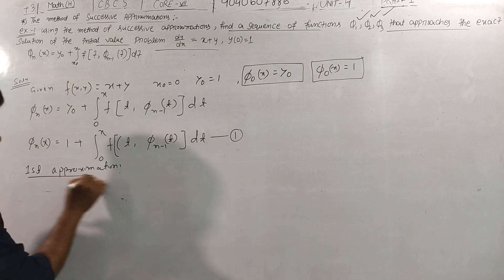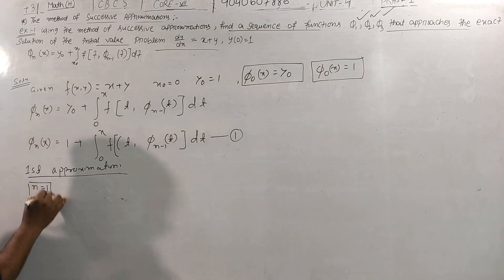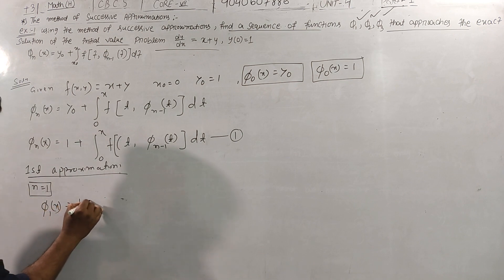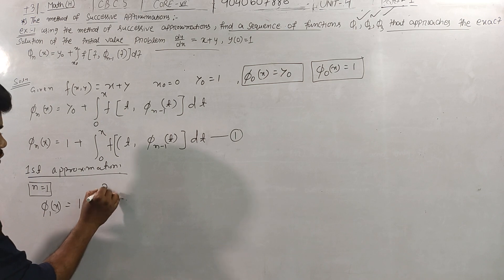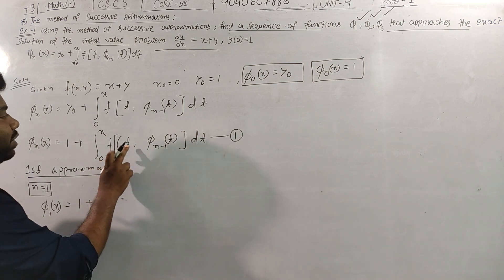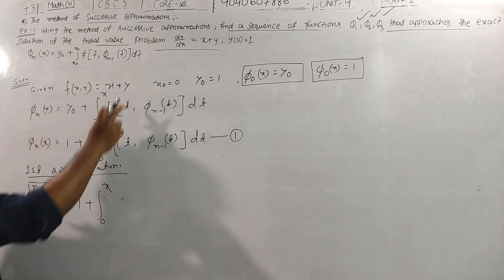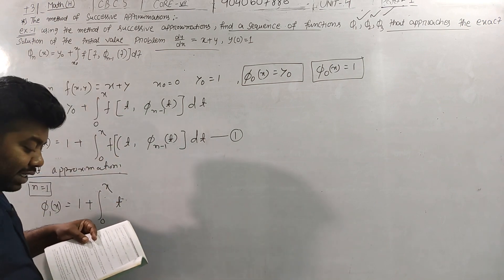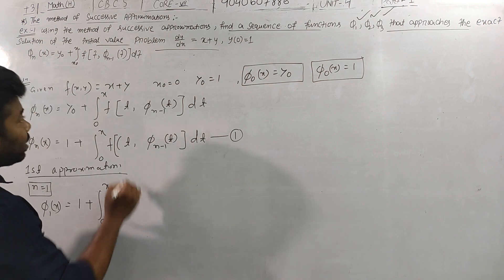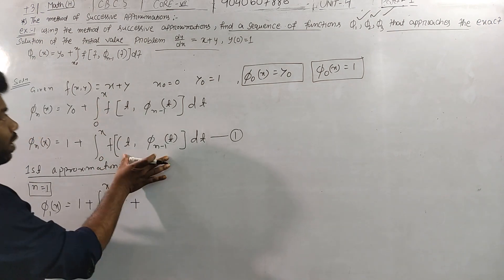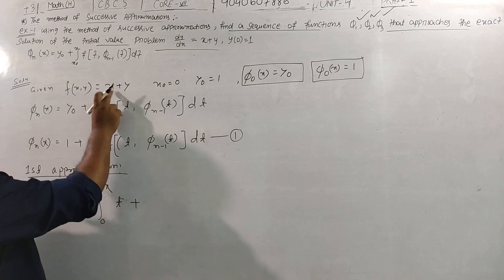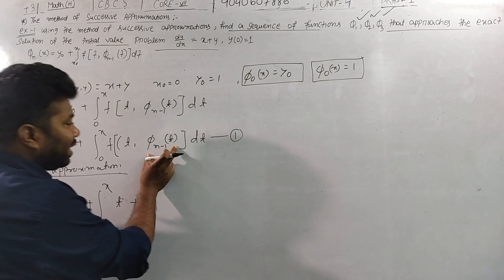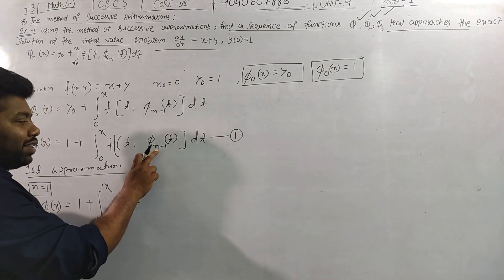For the first approximation, n = 1, we find φ1(x): φ1(x) = 1 plus the integral from 0 to x of f(t, φ0(t)) dt. The function f(x,y) = x + y, so f(t, φ0(t)) = t plus φ0(t). Since φ0(t) = 1, we substitute φ0(t) = 1 into the integral.